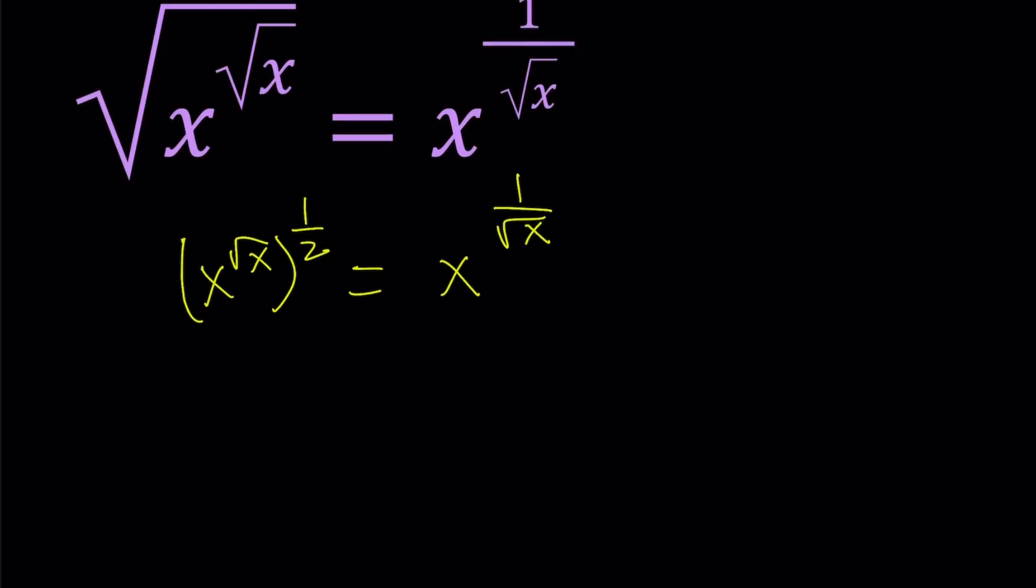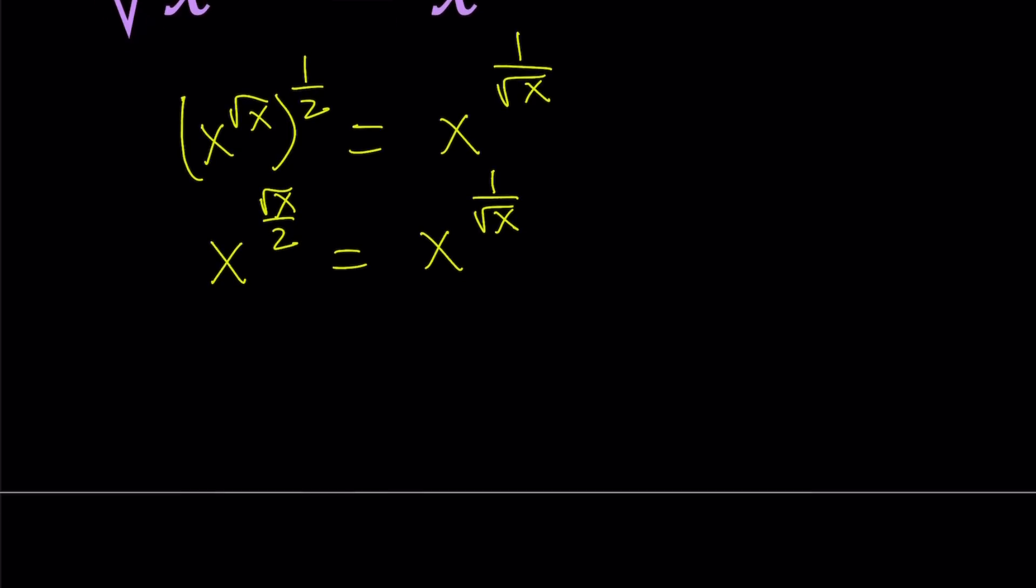There are some restrictions here, obviously. We're going to talk about those along the way. If you multiply these two exponents, you get x to the power square root of x over 2. And on the right hand side we have what we have, and we get an equality like this. So now we have the same base, which is nice. So we can talk about some of the special cases. For example, x equals 1 works, right?